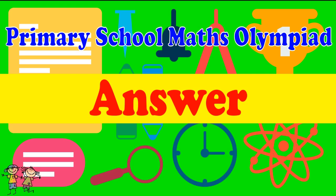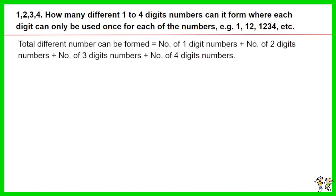Here is the recommended answer. Total different numbers can be formed equals number of 1 digit numbers plus number of 2 digits numbers plus number of 3 digits numbers plus number of 4 digits numbers.